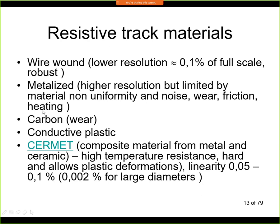The second possibility is a metalized layer — you take a base material like ceramics or plastic, deposit a metalized layer, and use it as the resistive track. Compared to wire wound, this has higher resolution — basically infinite resolution — but it is limited by material non-uniformity and noise. This layer can also be damaged by wear, friction, or heating, so it is a little less robust than the wire wound sensor.